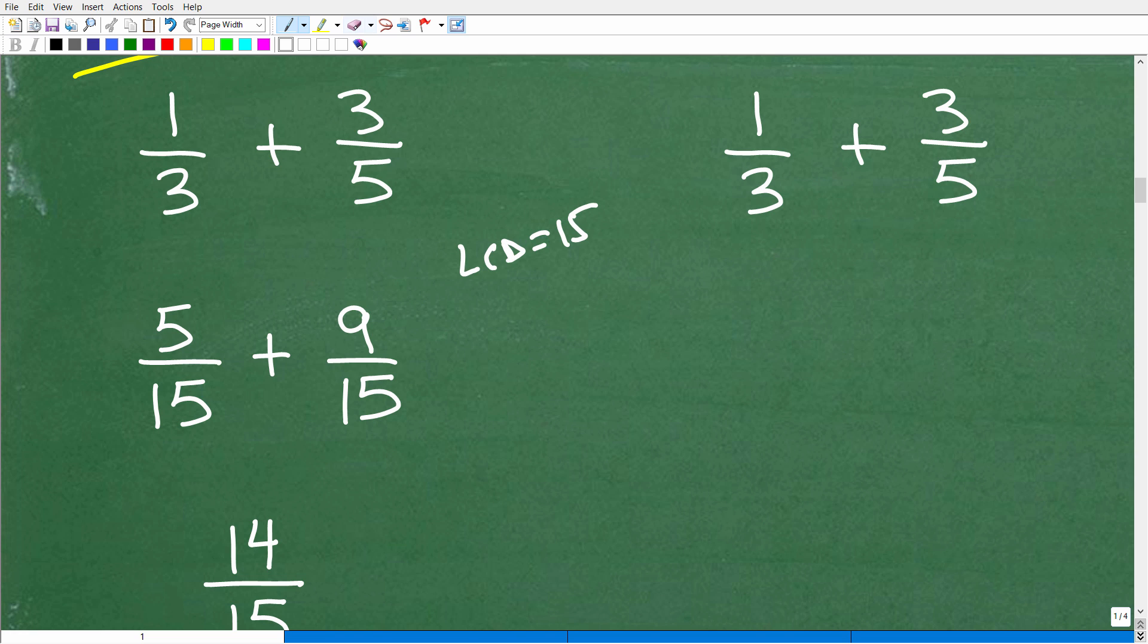So I'm not going to get into it with this video because it would just be too long. But the LCD here is 15. Now, if you didn't know that, then you just need to review what the LCD is, how to find the LCD and what it is. But we can't add or subtract fractions unless the denominators are the same. Okay, so here I have 3 and 5. The denominators aren't the same. So we want to write these fractions such that the denominators are the same. That denominator is called the lowest common denominator. So that's 15.